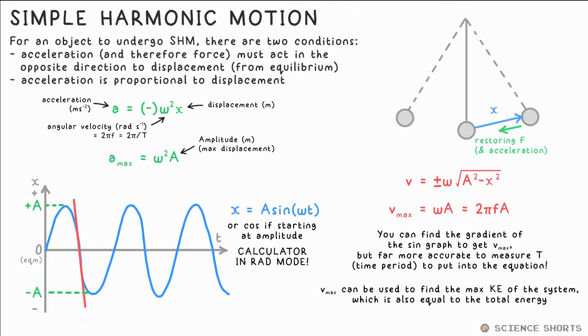But the far more accurate method is to get the time period and amplitude from the graph, then calculate V_max equals 2πFA, which is the same as 2πA over T.